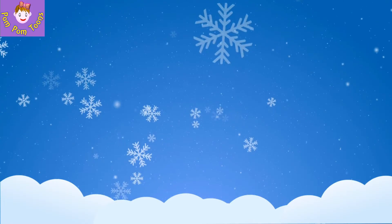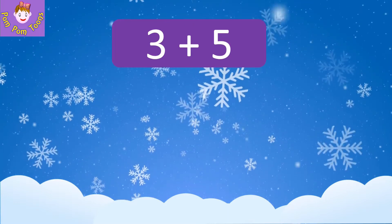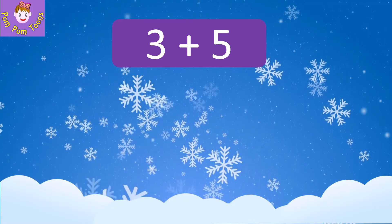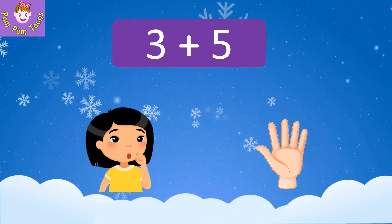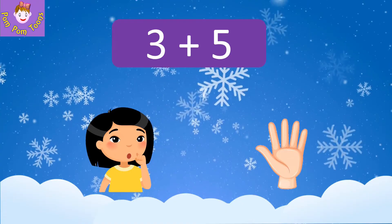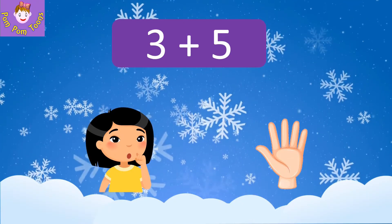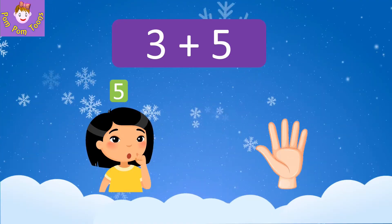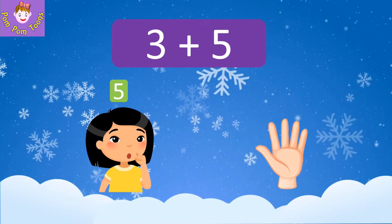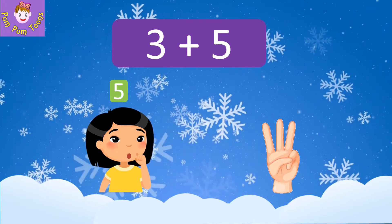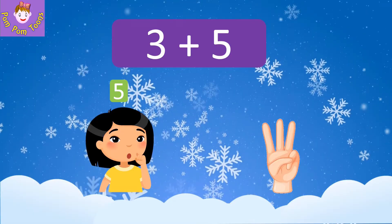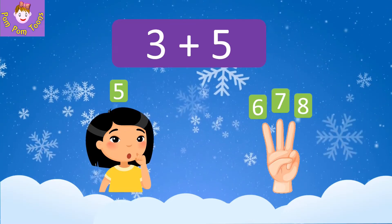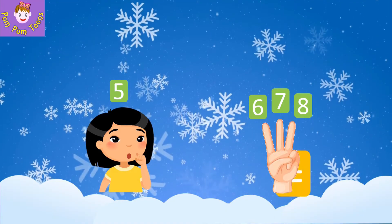Let's learn another way to add numbers. In this method, you use your fingers and mind to find the total. Always keep the big number in your mind — here it is five. Open as many fingers as the small number — here it is three. Open three fingers and count after the big number: six, seven, and eight. So three plus five is equal to eight.